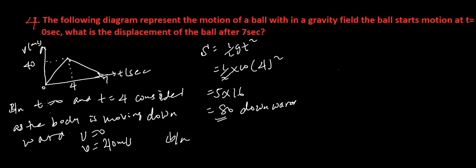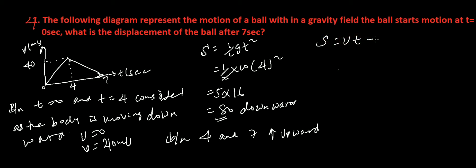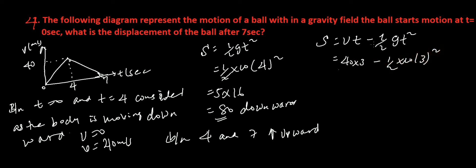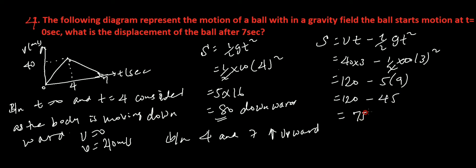Between t equals four and t equals seven, the body moves upward. For upward movement, S equals ut minus one-half gt squared. The time interval is three seconds. So S equals forty times three minus one-half times ten times three squared. That is 120 minus 45, which equals 75 meters upward.